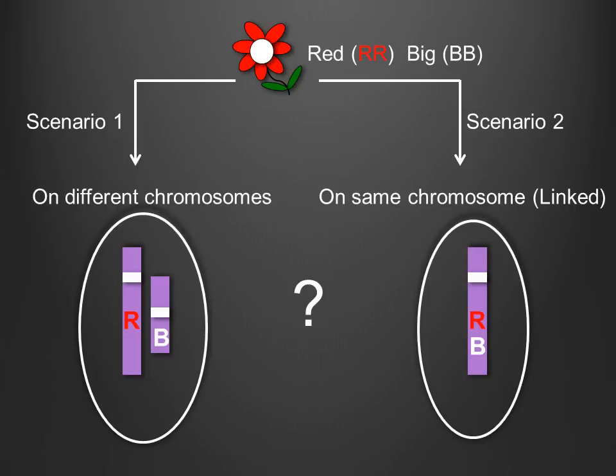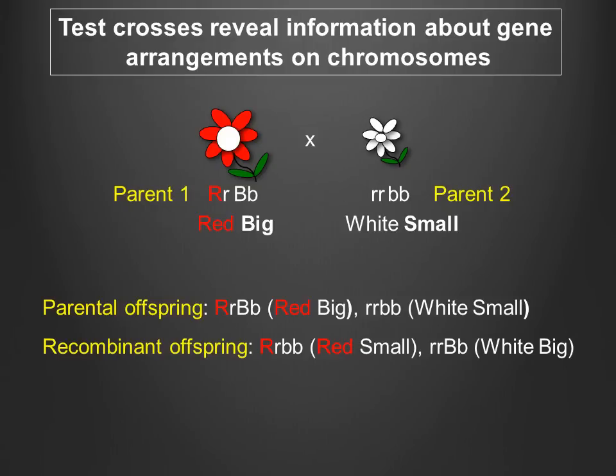Those genetic systems are like the example shown here, in that the phenotypes, but not the genotypes, of the individuals are apparent. Therefore, your goal is to perform a test whose phenotypic results can allow you to infer the chromosomal arrangement of the genes. In Mendelian genetics, this test is called a test cross.